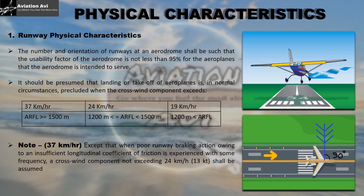It is assumed that aircraft can fly safely up to a particular crosswind component. Landing or takeoff is in normal circumstances precluded when the crosswind component exceeds limits based on ARFL. ARFL is the minimum field length required for takeoff, calculated under ideal conditions: aircraft at maximum certified takeoff mass, runway at sea level, standard atmosphere, calm wind, and a flat runway with no slope. This length is given in the aircraft flight manual and provided by the manufacturer.